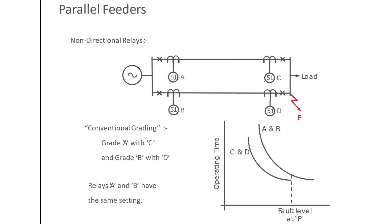If we are using a definite time relay, the time of operation for relay C should be lower, like 0.1 seconds, and the time of operation of relay A will be higher, suppose 0.5 seconds, with a coordination time interval of 0.4. Similarly, relay B will be graded with relay D.